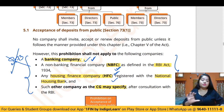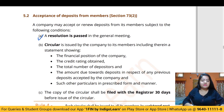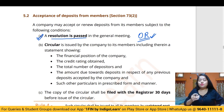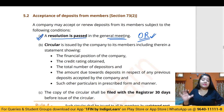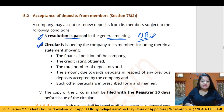The first condition in Section 73 is that if a company wants to accept deposits from members, an ordinary resolution must be passed in the general meeting — meaning more than half of the members present must agree to the acceptance of deposits.